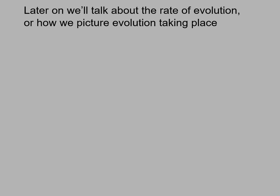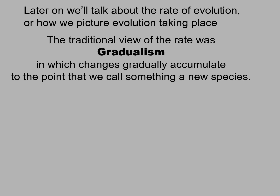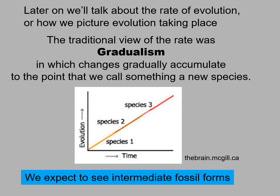Later on, we'll talk more about the rate of evolution, or how we picture evolution took place or is taking place. The traditional view of the rate was gradualism, in which changes gradually accumulate to the point that we call something a new species. We have seen this in the fossil record — you would expect to see intermediate fossil forms.